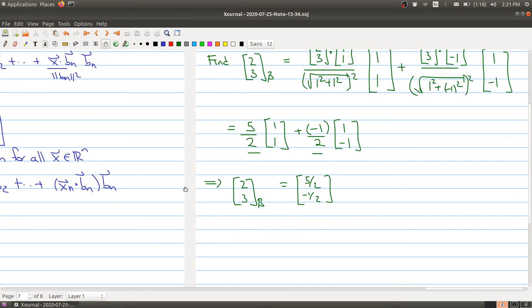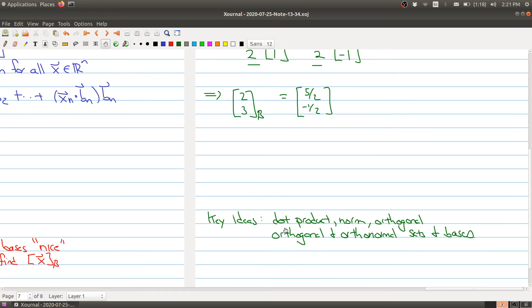So there are a bunch of things that we've learned today. We've learned about the dot product, we've learned about the norm, we learned about orthogonality, we learned about orthogonal and orthonormal sets of bases. A lot of new things that we learned in today's class. And just to give you a preview for next class: because we've talked about the importance of orthogonal sets and orthonormal sets, but we haven't actually talked about constructing them.